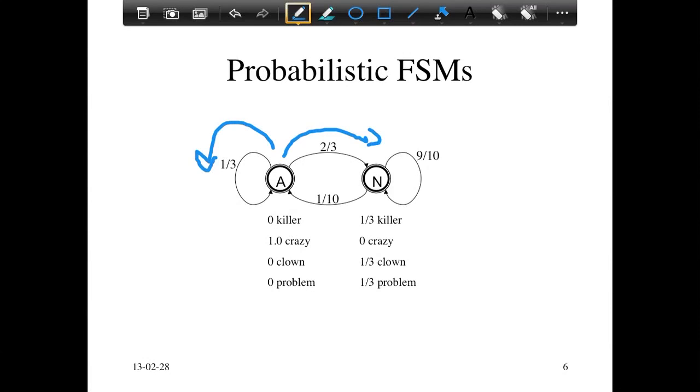You add them up, you should get one. And the same for the outgoing arcs from N. You get nine tenths and one tenth. If you sum that up, you should get one, confirming that it's a valid transition probability for each state.